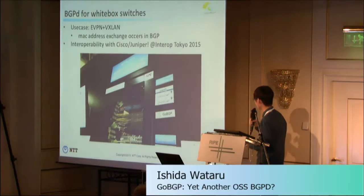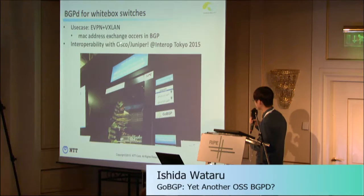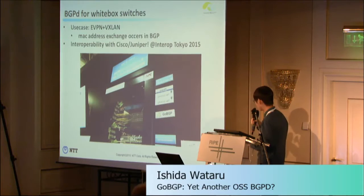One use case is eVPN plus VXLAN. GoBGP also supports eVPN, a technology to construct L2 VPNs and exchange MAC addresses between BGP daemons. In that use case, we use Netlink directly to configure the FIB in the Linux networking subsystem. We have already checked interoperability with Cisco and Juniper boxes at Interop Tokyo this year, using Cumulus Linux and Quanta white-box switches.